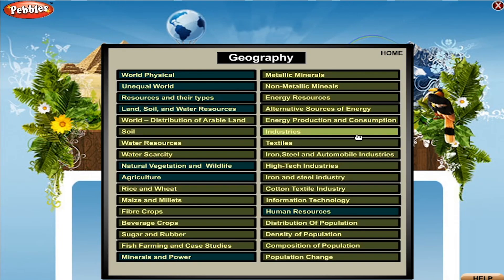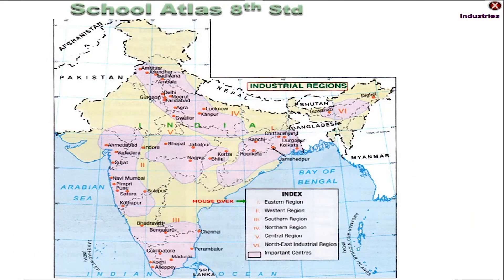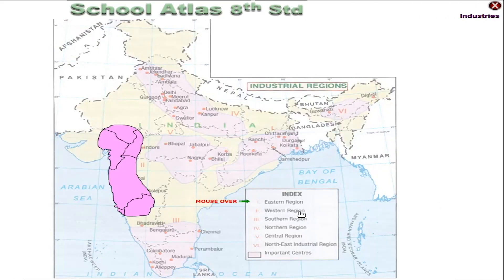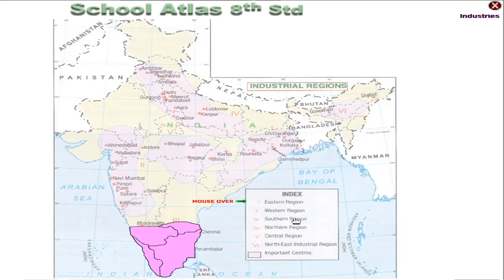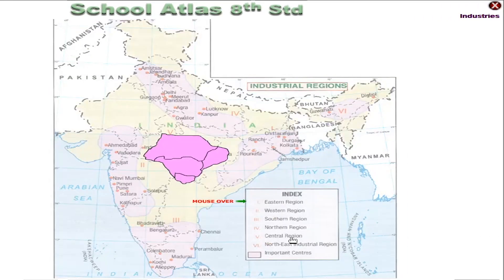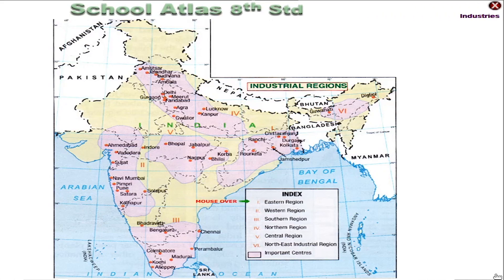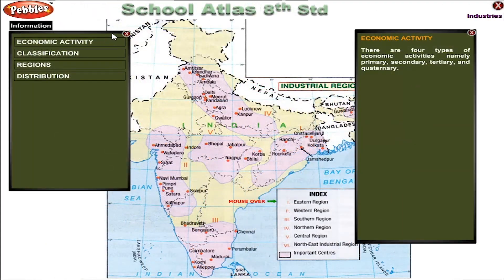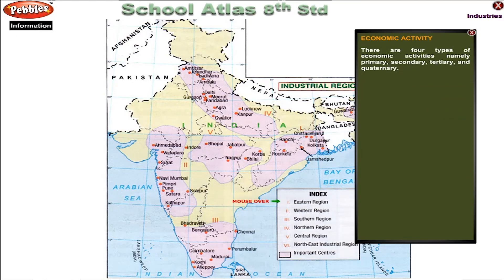Geography and Industries. There are four types of economic activities, namely primary, secondary, tertiary and quaternary.